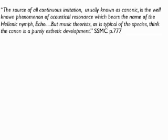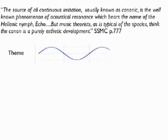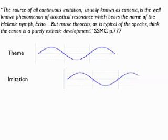Schillinger only deals with counterpoint in two parts — the existence of notes for counterpoint in more than two parts is unclear. He approaches the subject as a physicist. A two-part canon is a melody folded over on itself, coexisting in two or more different parts in different phases.